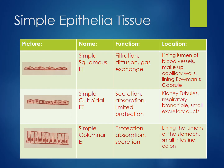Simple epithelial tissue includes epithelia that are only one layer thick. This first type of simple epithelia is squamous, which is composed of flat, thin, irregular-shaped cells. The second is cuboidal, which is composed of cells that resemble hexagons. The third type is columnar, which is composed of column or rectangular-shaped cells.